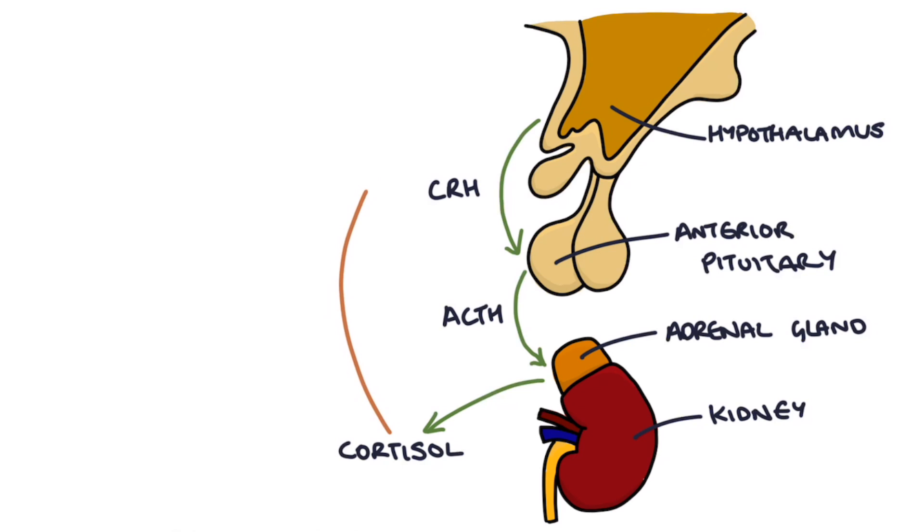Cortisol then feeds back to the hypothalamus and the anterior pituitary gland to tell them to back off releasing the stimulatory hormones because there's plenty of cortisol in the body already. This produces negative feedback, which helps to settle down how much cortisol is being produced.